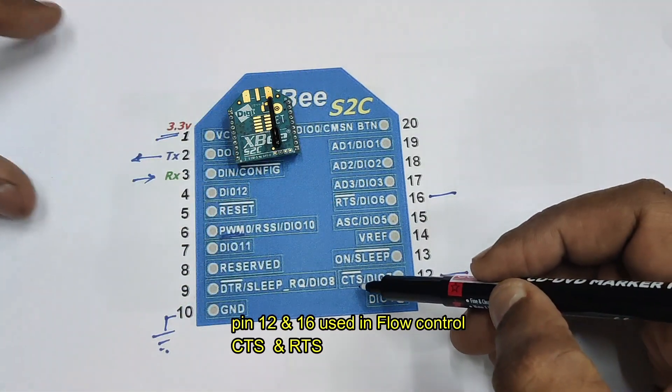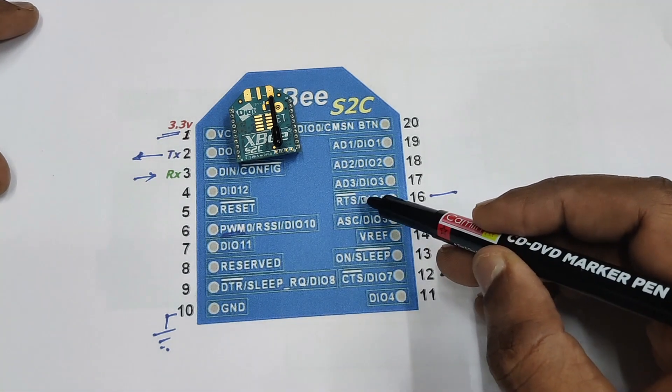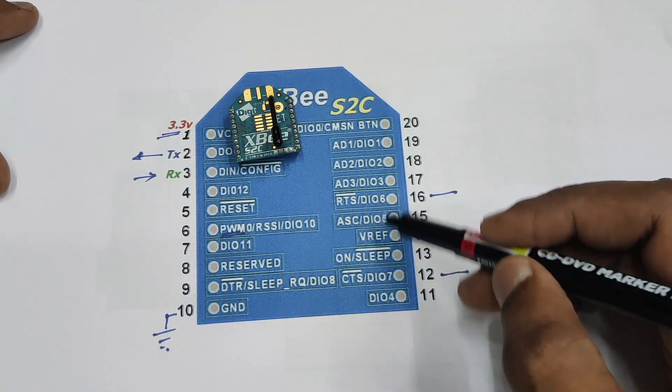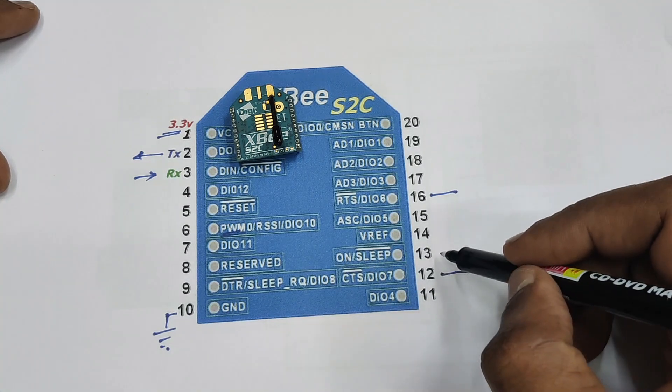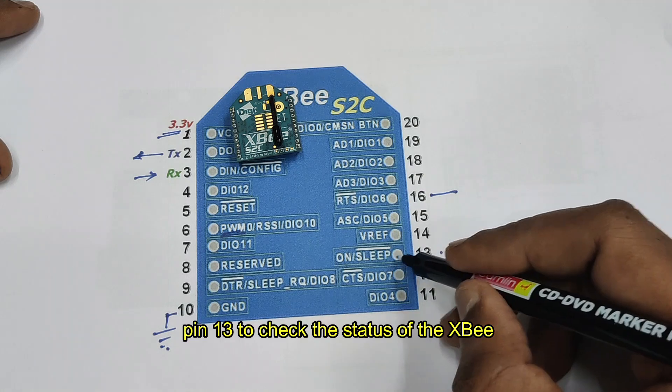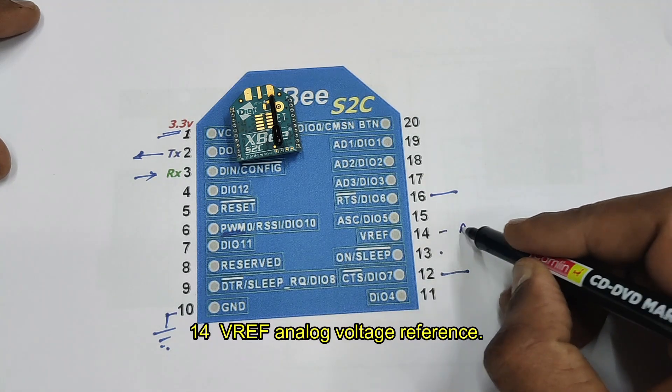Pin 11 is IO 4. Pin 12 and 16 act as hardware flow control or handshake: Request to send RTS and clear to send CTS. CTS is pin 12, RTS is pin 16. It is used to reduce frame collisions, used as handshake.